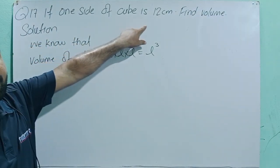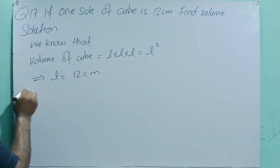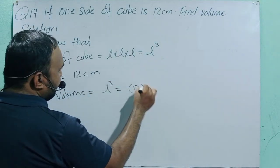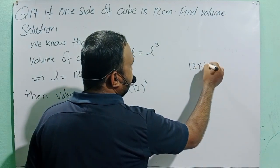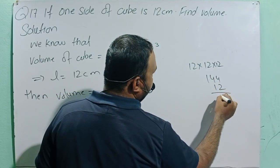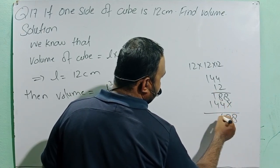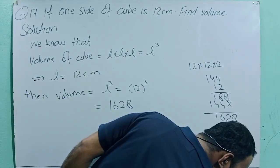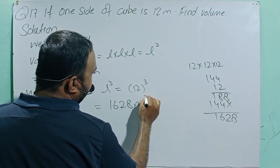The one side of the cube is 12 centimeters, so L equals 12 centimeters. Then volume equals L cubed equals 12 cubed. 12 cubed means 12 × 12 × 12. 12 × 12 = 144, and 144 × 12 = 1728. So the volume equals 1728 cubic meters. This is the answer. Exercise 1A is complete.